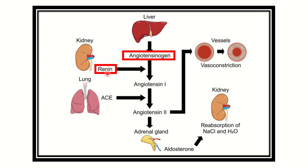Our main focus is what substance renin acts on. In hypovolemia, blood circulation to the kidney decreases, so renin is released from the kidney and enters the circulation. In the circulation, there is already a prepared substance — angiotensinogen — released from the liver. Angiotensinogen is always present in the blood, originating from the liver. When renin encounters angiotensinogen, it acts on it and converts angiotensinogen into angiotensin one.